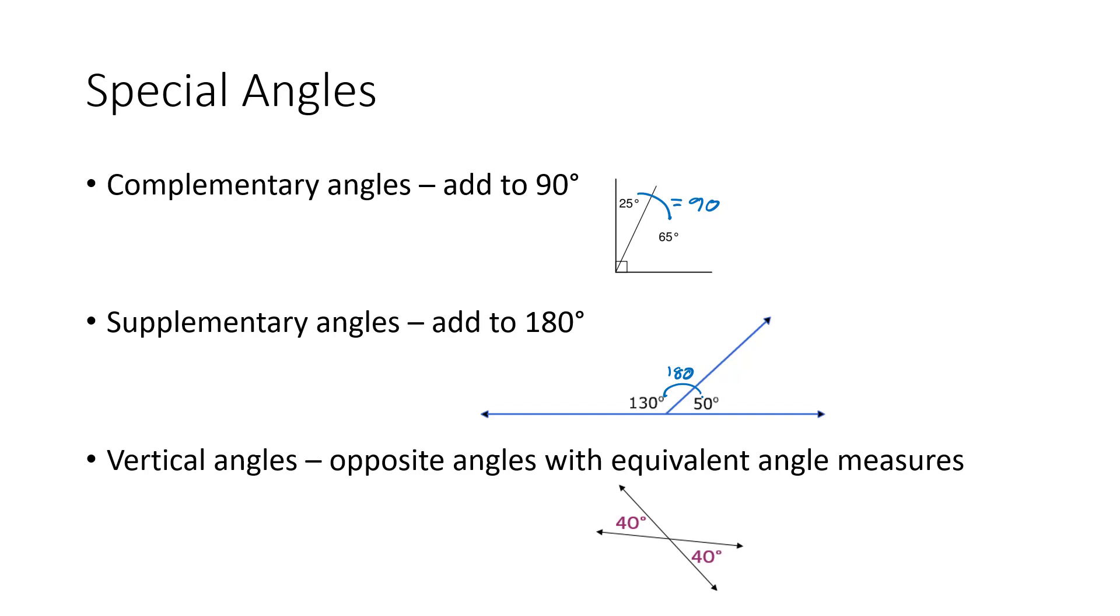The third type of angle we need to know are what are called vertical angles. Vertical angles are opposite angles with equivalent angle measures. We have two lines that cross, like these two lines here. If one of these acute angles is 40 degrees, the other acute angle is also 40 degrees.